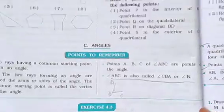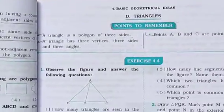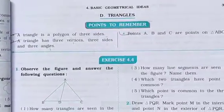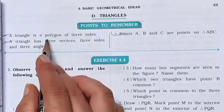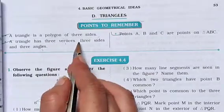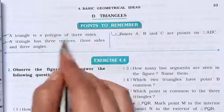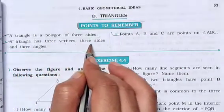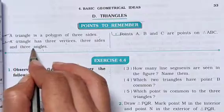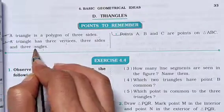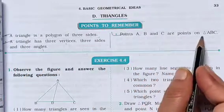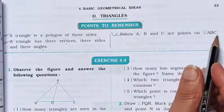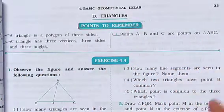Next point: Triangle. A triangle is a polygon of three sides. A triangle has three vertices, three sides and three angles. The vertices of triangle ABC are the points A, B and C.